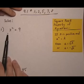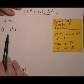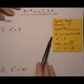And we're going to use a different approach. Instead of using factoring, we're going to go ahead and use something called the square root property.